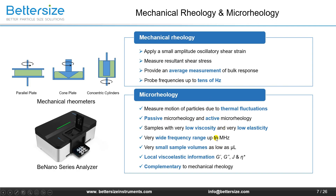In contrast, microrheology is a technique used to measure the rheological properties of a material by measuring the motion of tracer particles. It allows elastic and viscous properties to be measured quickly and without contact. Depending on the force applied to the tracer particle, there are two types: passive microrheology, which uses inherent thermal energy to move the tracers, and active microrheology, which uses externally applied forces. Microrheology has several benefits, including the ability to measure samples with very low viscosity and elasticity, measure over a wide frequency range, use very small sample volumes (only a few microliters), and provide local viscoelastic information such as G-prime, G-double-prime, J, and Eta-star. It can also show good agreement with mechanical rheometers and be used as a complement to mechanical rheology.